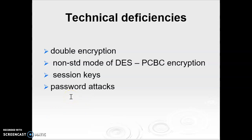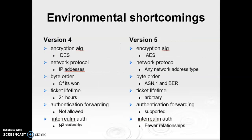Regarding password attacks: both versions are vulnerable. The message from the Authentication Server to the client includes material encrypted with a key based on the client's password. An opponent can capture this message and attempt to decrypt it by trying various passwords. Version 5 does provide a pre-authentication mechanism that makes password attacks more difficult, though both versions remain vulnerable.